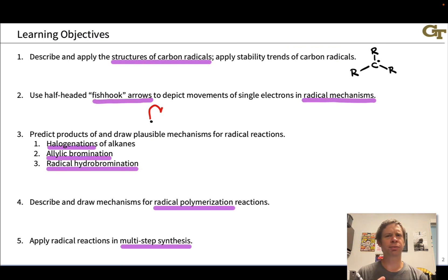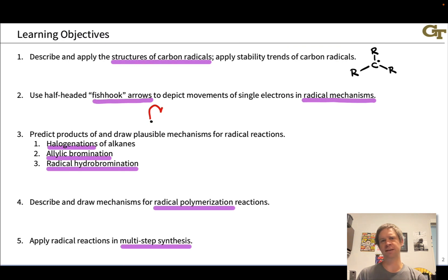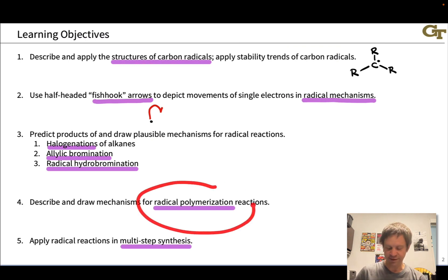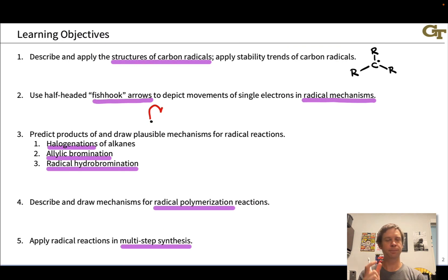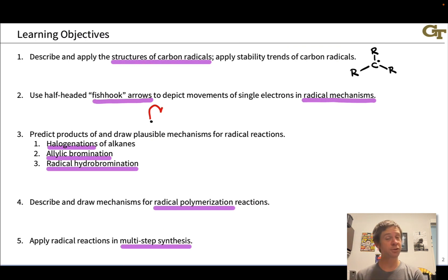We're going to focus on three categories of radical reactions in this unit: halogenations of alkanes, allylic bromination, and radical hydrobromination. We're going to look at these in great detail and learn how to predict their products and draw plausible mechanisms. We'll also touch on radical polymerization, a very important practical application of radical chemistry, allowing us to build very long organic molecules from simple monomer structures via repeated radical reactions. Then we'll learn how to apply radical reactions in multi-step synthesis and see where they provide complementary outcomes to ionic reactions.